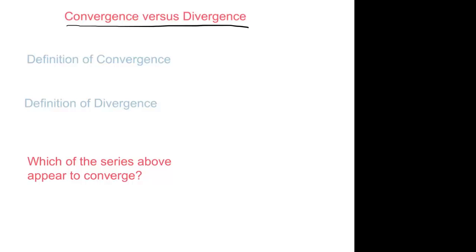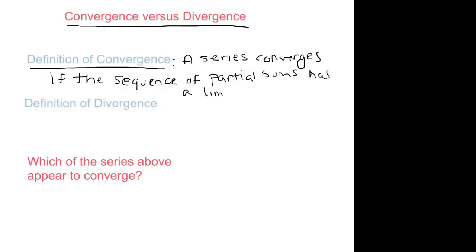I want to talk about convergence and divergence. The definition of convergence is a series converges if the sequence of partial sums has a limit as n goes to infinity. And the definition of divergence is just a series that doesn't converge.